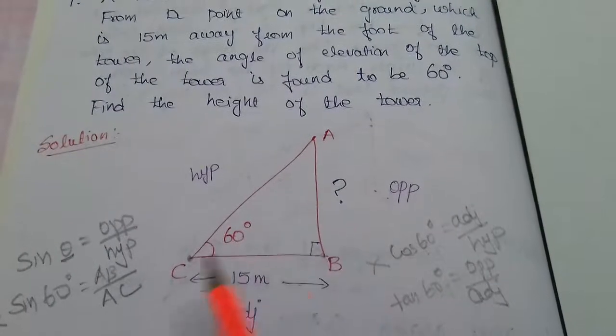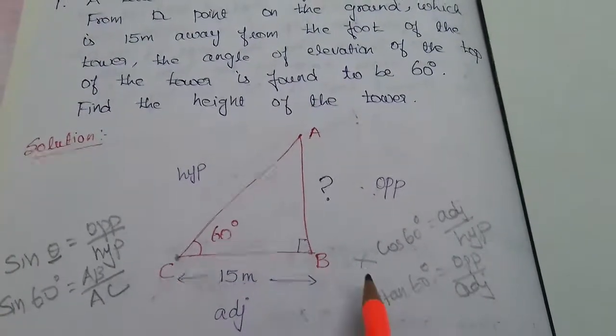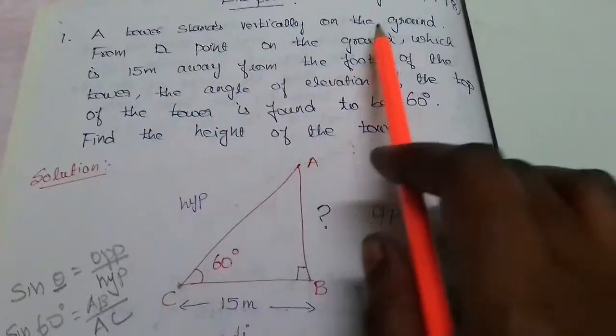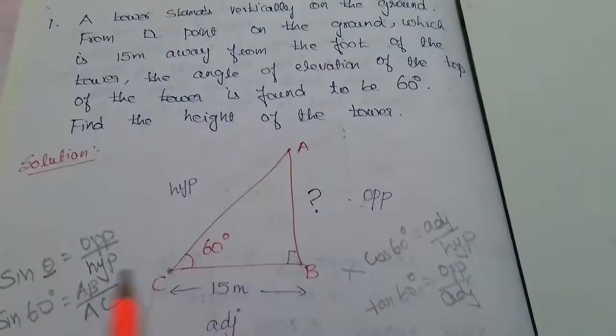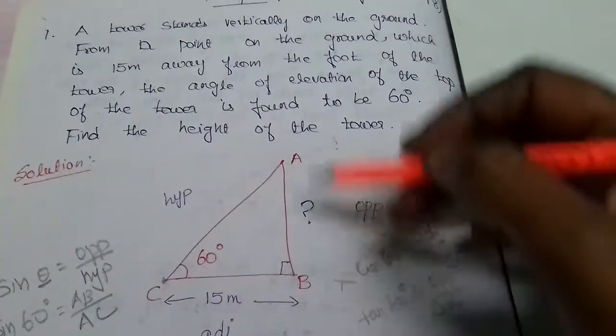We will map a right angle triangle. We will map values. BC is ground level. Consider AB is the tower. A tower stands vertically on the ground. BC is ground level, AB is the tower.